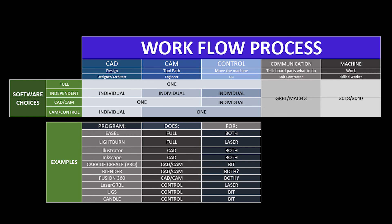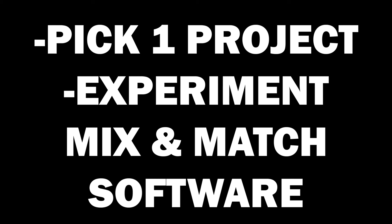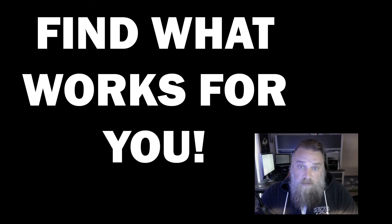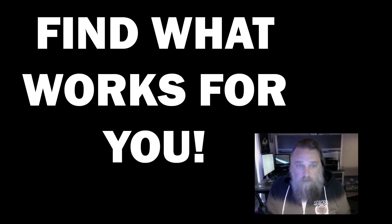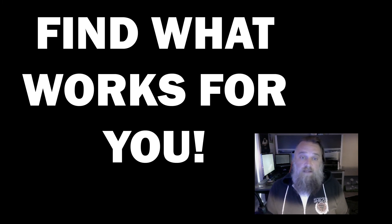Going back to the South Park reference: step one is CAD/CAM, step two is Control/Communication, and step three is machine — your profit. I hope this helps you through the process of picking out what's going to work for you and your machine. Remember, find one project you want to do — whether it's cutting wood, 3D carving, acrylic, or aluminum — focus on that, get all the different moving parts down, and experiment with different softwares. Maybe the first software you use isn't going to be the best for you. Don't be afraid to try different things; a lot of software has free trial periods.